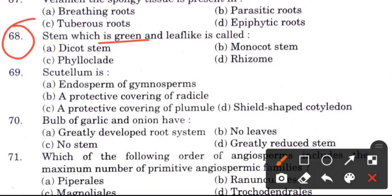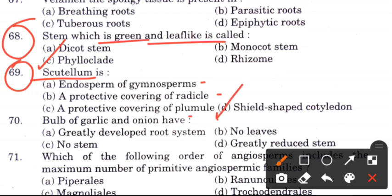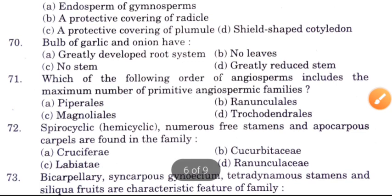Question 68: A stem which is green and leaf-like — and a protective covering of radicle, a protective covering of plumule, and shield-shaped cotyledons — the answer is D, shield-shaped cotyledons, which is the scutellum.